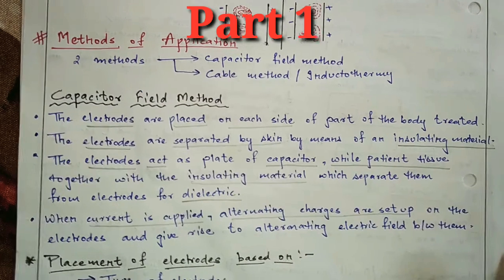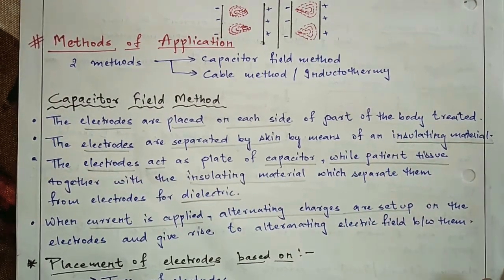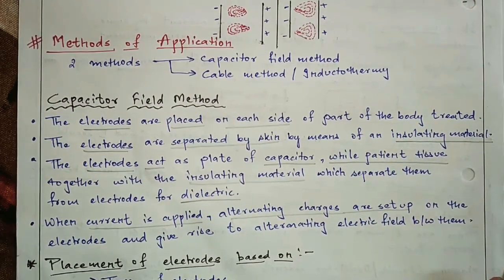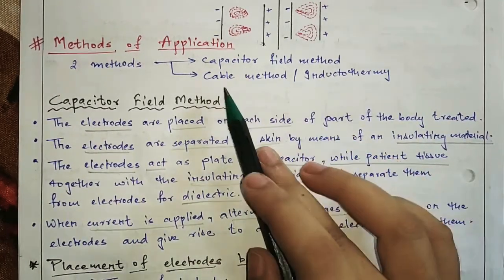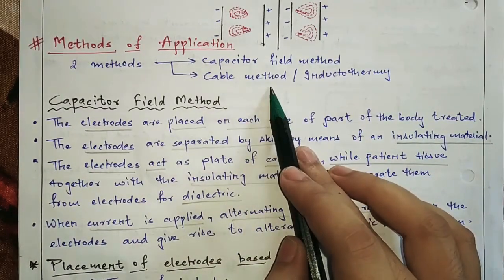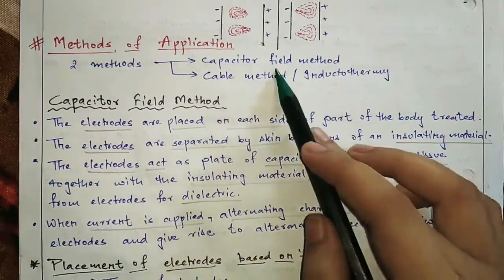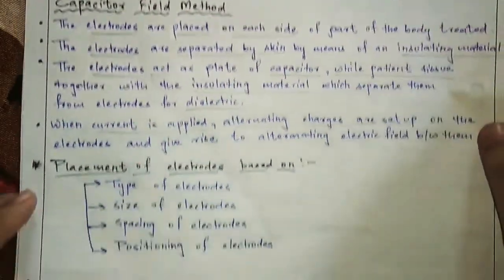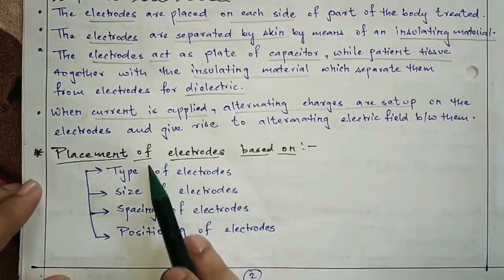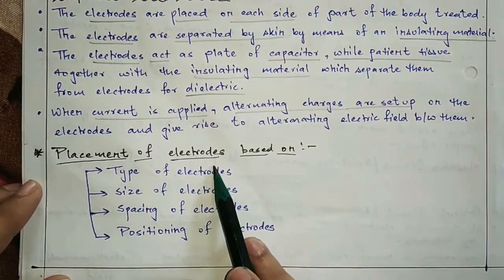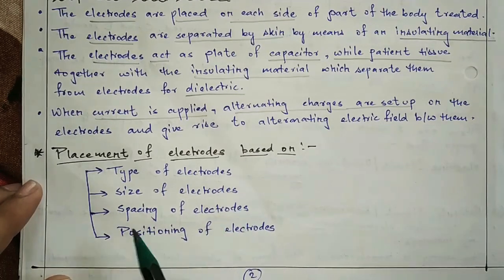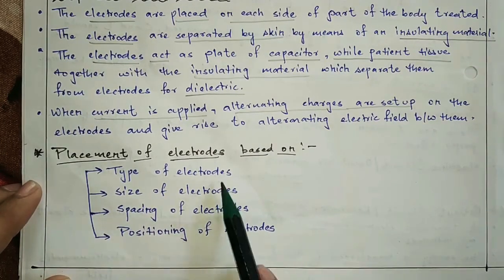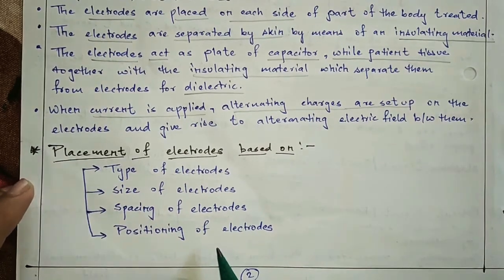In this video, we will tell the method of application. There are two methods: one is the capacitor field method and the other is the cable method. In this video, we will tell the capacitor field method. Then we will tell the placement of electrodes — types of electrodes, size of electrodes, spacing of electrodes, and positioning of electrodes. We will discuss all of this briefly.